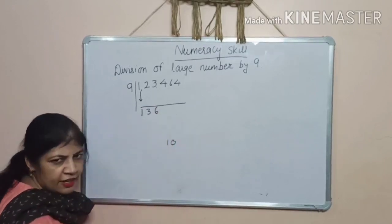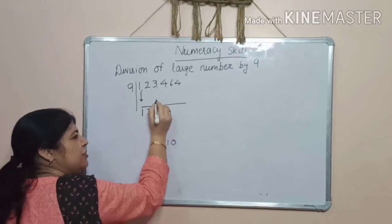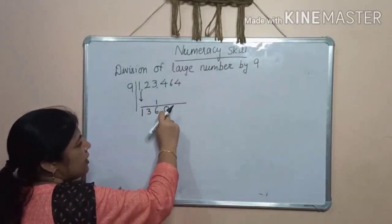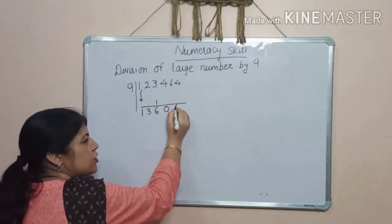Now, we can't write 10 here because it is a 2 digit number. So, we will write 0 here and 1 carry. Okay? Now, add 10 to the next digit. 6. 16. Same.